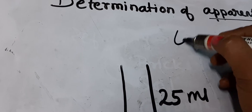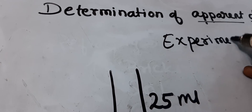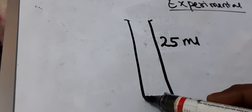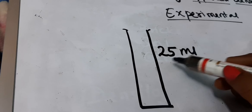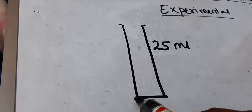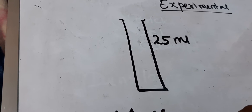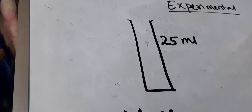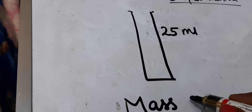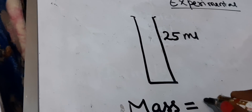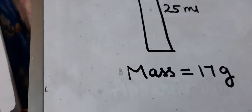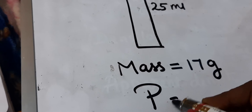Now let's see about the experimental part — the procedure. To determine the apparent density of a refractory, first we must take a container. Here a 25 ml measuring jar is taken. The mass of this measuring jar must be measured using a digital weighing balance. Let us take the mass of this empty measuring jar to be 17 grams — let this be P, so P = 17 grams.